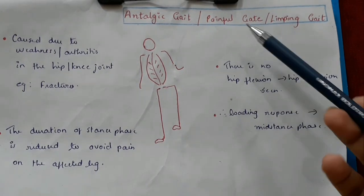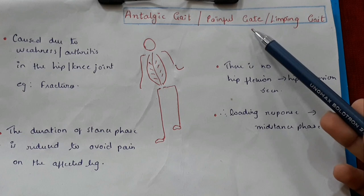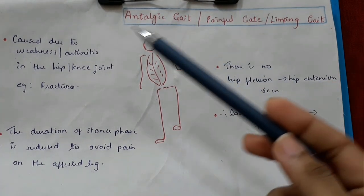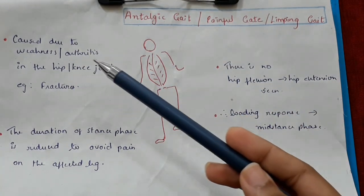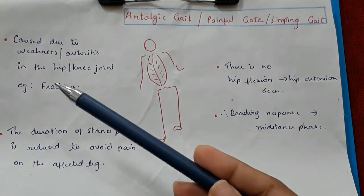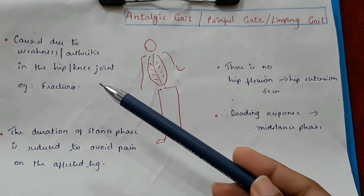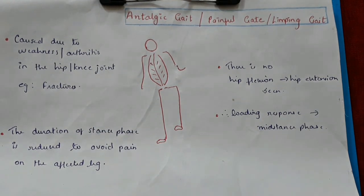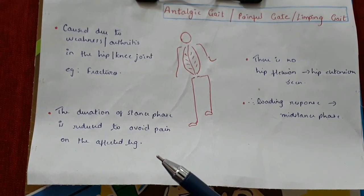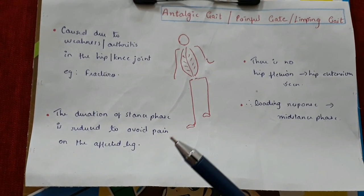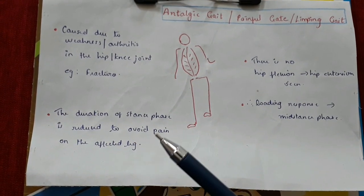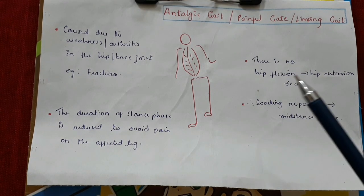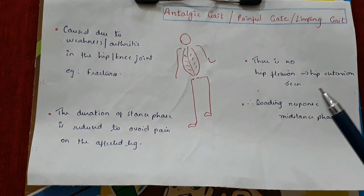Antalgic gait, also called the painful gait or the limping gait, is caused due to weakness or arthritis in the hip or the knee joint — for example, seen in fractures. The duration of the stance phase is reduced to avoid pain in the affected leg. There is no hip flexion to hip extension seen, therefore the loading response to mid-stance phase is affected.